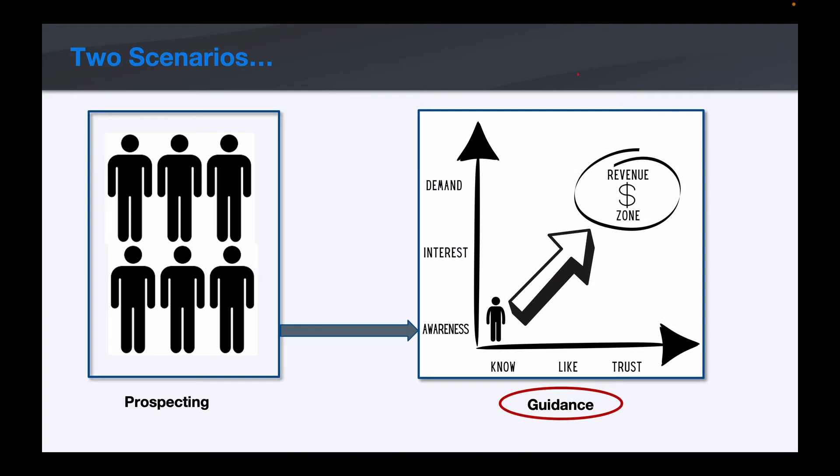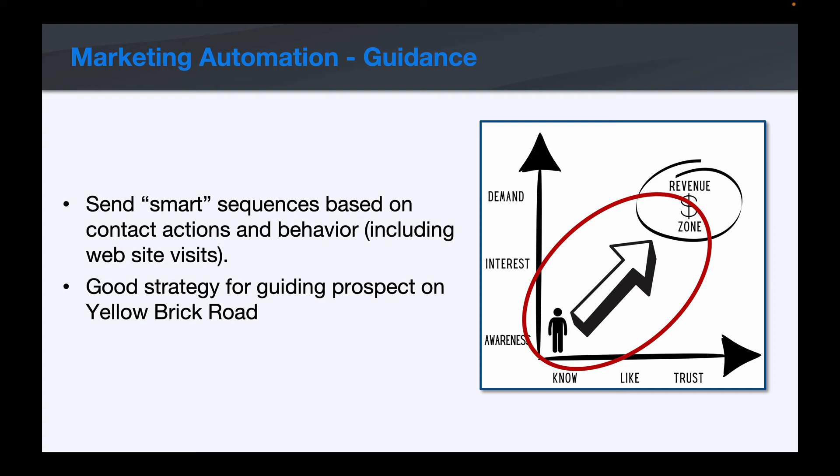The second scenario is guidance. Once we have somebody in our revenue zone matrix, we want to guide them — move them up the yellow brick road into the revenue zone. We have the ability to send smart sequences based upon their actions and behaviors. For example, if we bring somebody into the revenue zone to consume a video or read a blog post, based on that action we can trigger another email that takes them to the next step in that yellow brick road journey. We're using smart actions and sequences to drive the next step along the way.